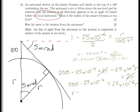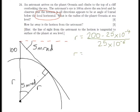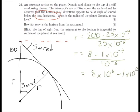So therefore R equals 200 minus 25 times 10 to the minus 4 divided by 25 times 10 to the minus 6. First of all, let's divide by 25, so this will give us 8 take away 1 times 10 to the minus 4 divided by 10 to the minus 6, which becomes 8 times 10 to the positive 6 minus 1 times 10 to the 2. So therefore R equals 8 times 10 to the power of 6.